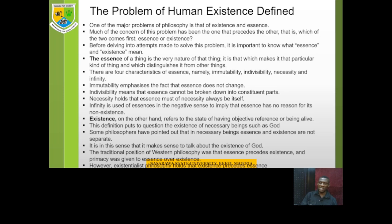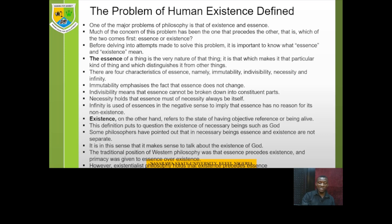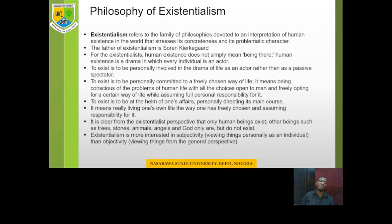Going back to our question: between essence and existence, which one comes first? In traditional philosophy, the position has always been that essence precedes existence — essence comes before existence. But existentialist philosophy in the contemporary period came up to challenge that traditional view, arguing that existence does not come before essence. Instead, existence comes before essence. For the existentialist, you must first exist before you can define yourself and make yourself someone unique.